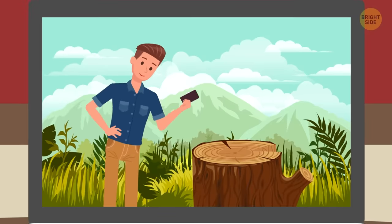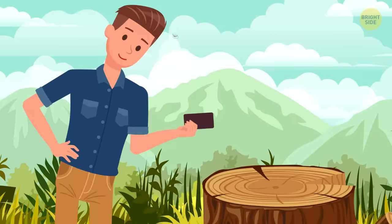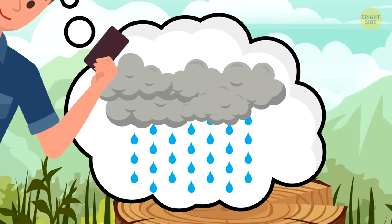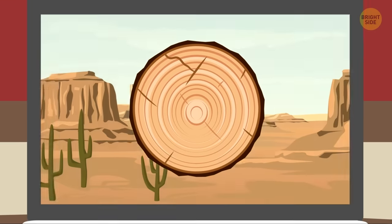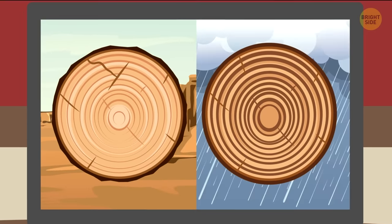Tree rings can not only tell you how old a tree is, but also let you know how the weather changed during the tree's lifetime. Tree rings are thinner during drought years and whiter when there was a lot of rain.